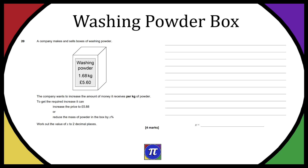We have question 20 from the past paper — link down below — and it should be part of a playlist on my channel. If you have any questions throughout the video, just drop them down below. So, question 20 says: a company makes and sells boxes of washing powder.